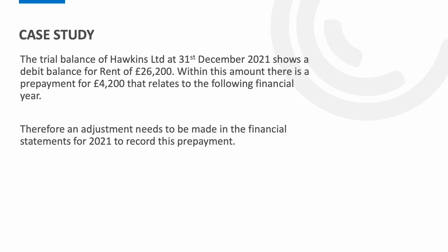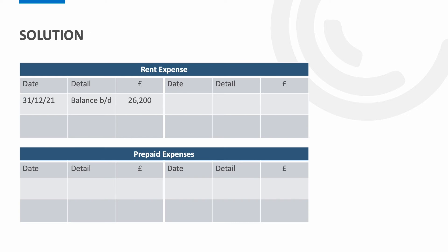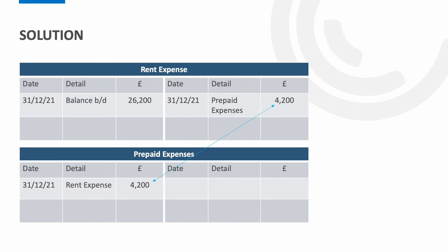Firstly let's have a look at our accounts before any adjustments are made. We can see that there's currently a balance of £26,200 within the rent expense account, and a nil balance within the prepaid expenses account. The next step is to record the prepaid expense within our accounts. To do this we credit the rent expense by the prepayment amount of £4,200 and debit the prepaid expenses for £4,200. At this point we've successfully entered the prepayment within our accounts.